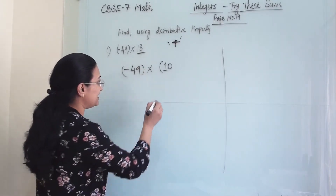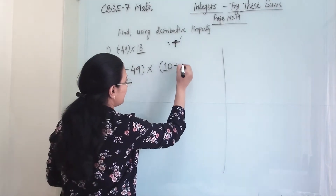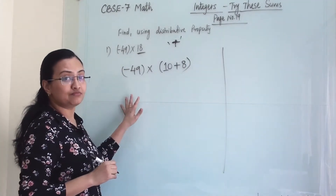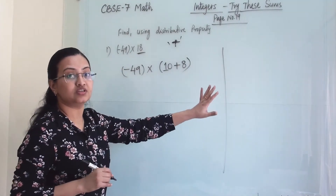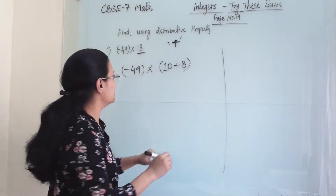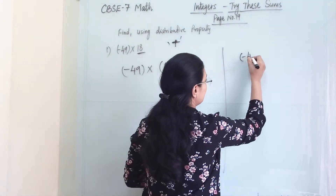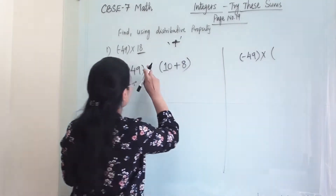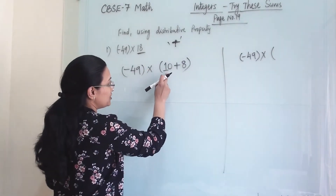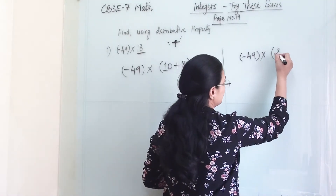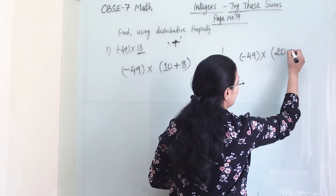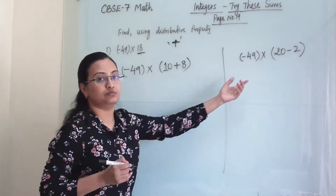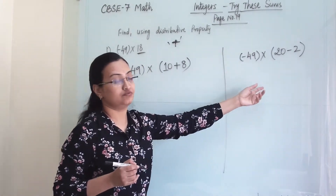So here I have taken 10, and with addition I am adding 8. If the same thing I have to do with subtraction, then minus 14 will remain the same — here I am using subtraction, so I have to take 20, giving us 20 minus 2. So these will be my numbers when I go to solve this.